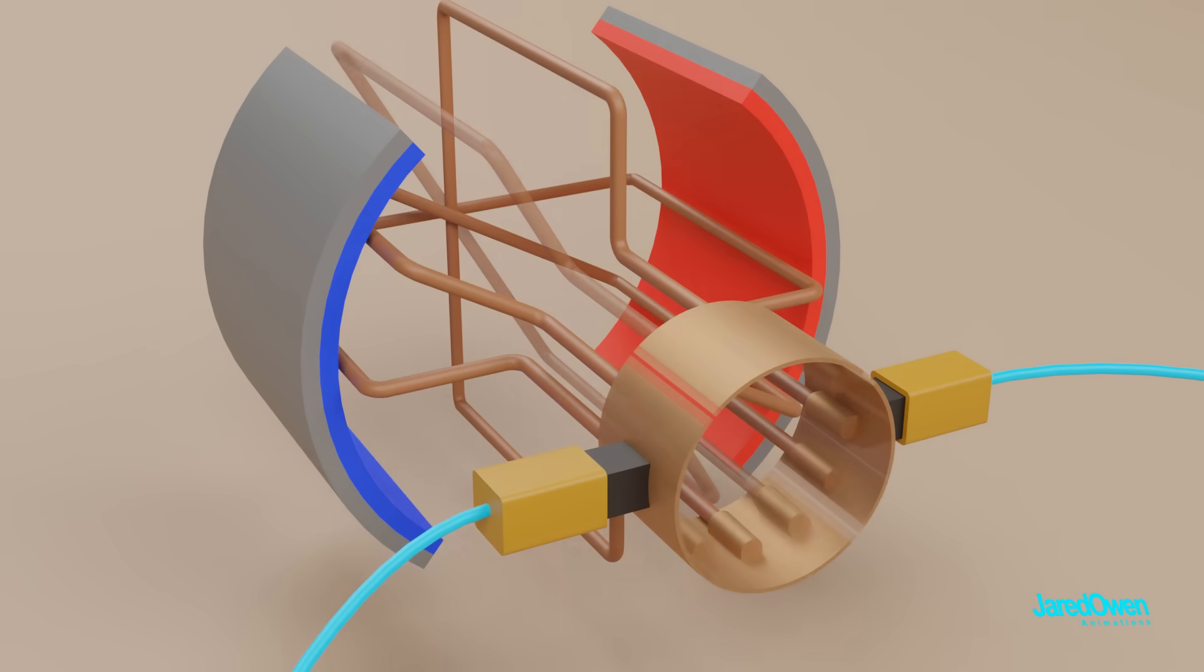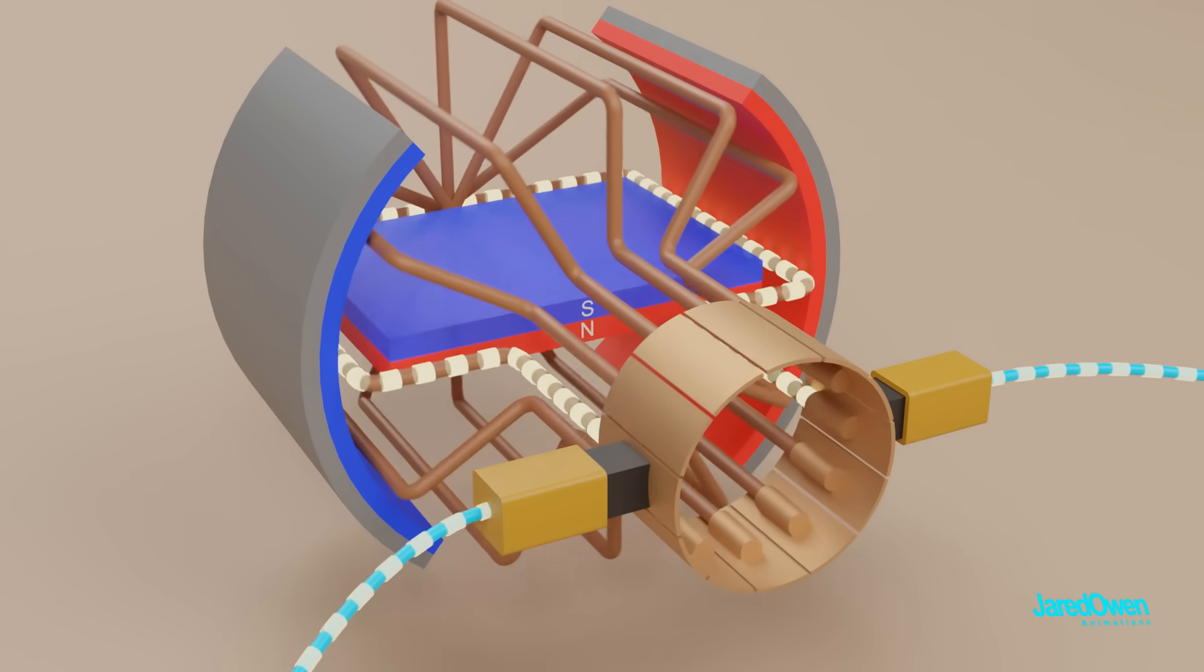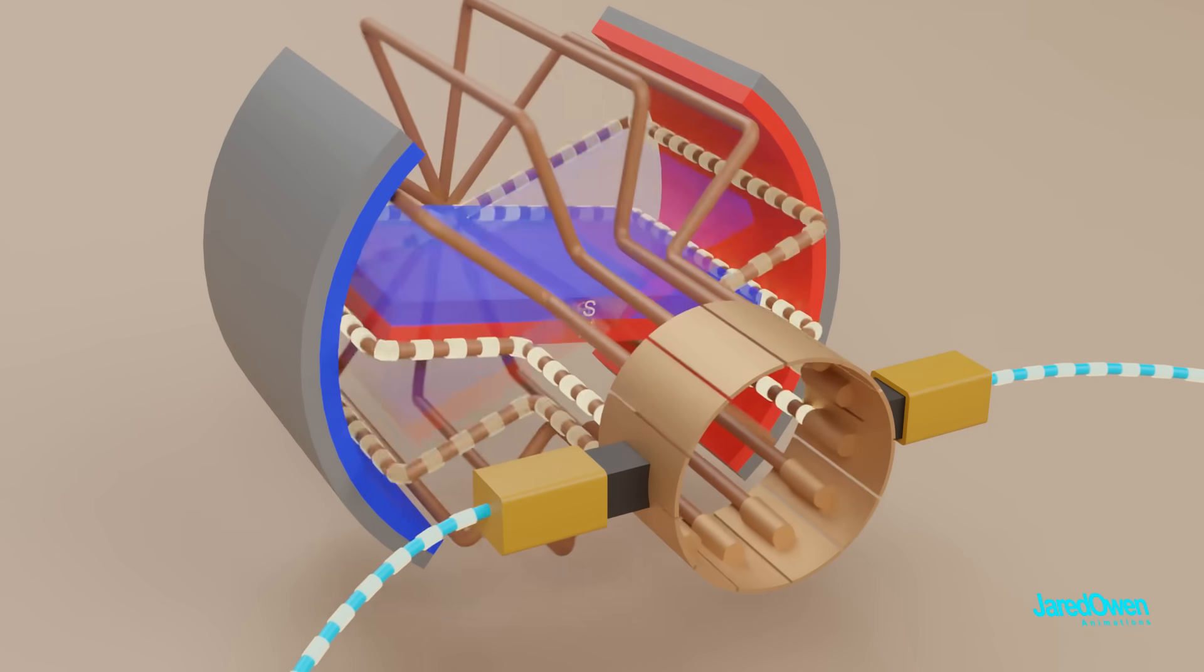Some electric motors will add many loops to the armature. This ensures that there will be a continuous spinning motion on the motor.